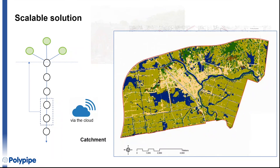Ultimately, what is the potential? Could we manage a whole catchment? At any one time, understand where and at what levels the water is within the network, and in relation to current weather data, manipulate the levels and create volume within the network to account for an impending storm event without overloading the system. And at all times, maximising water for reuse to support those green assets.